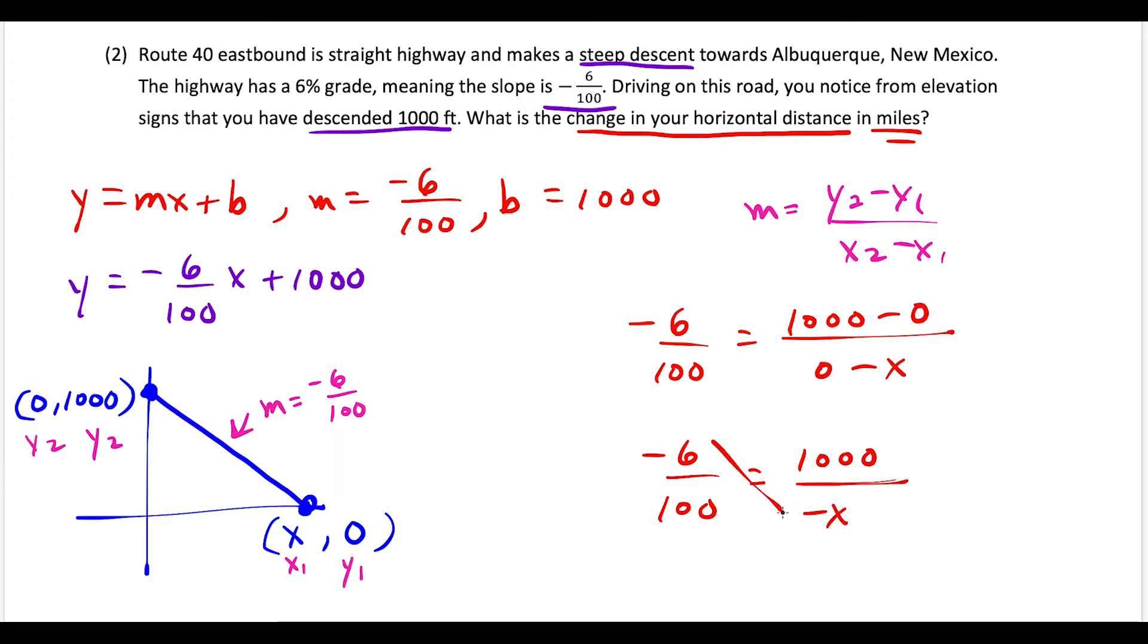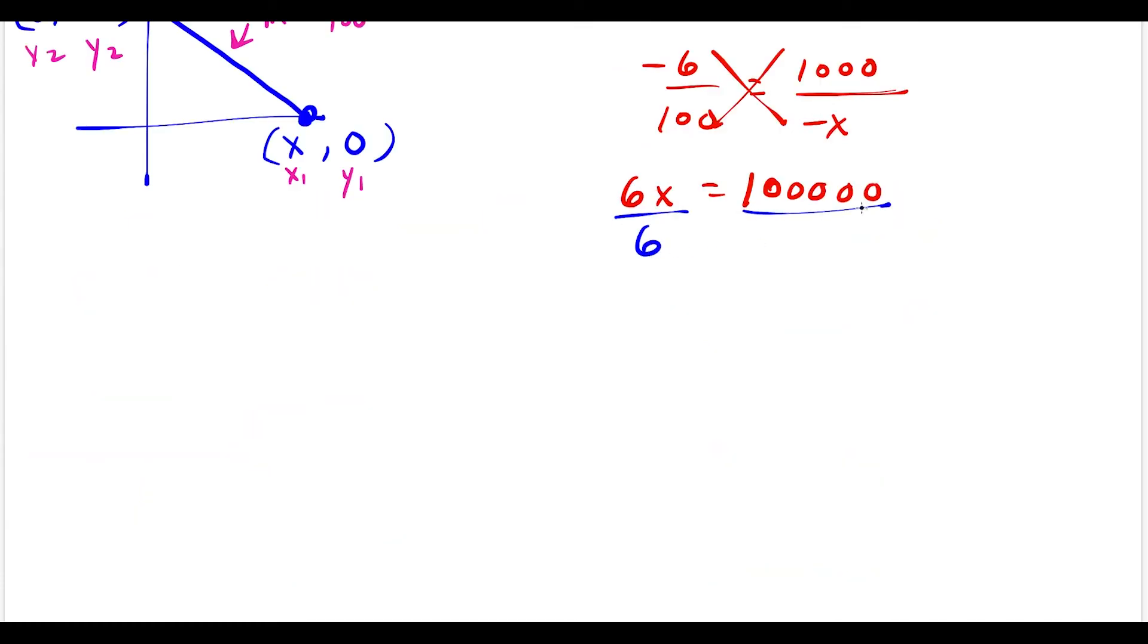Now we cross multiply. -6 times -x is +6x, and 100 times 1000 gives us a one with five zeros: 100,000. So we have 6x = 100,000. Now we divide both sides by 6.